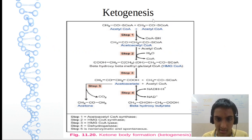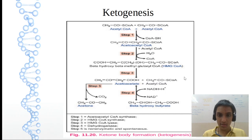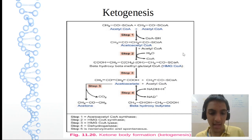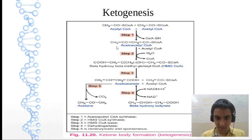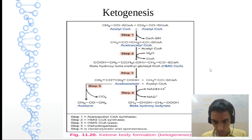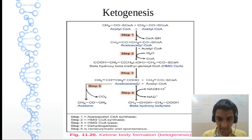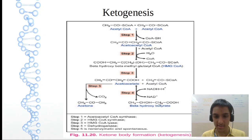Let us see ketogenesis. Two molecules of acetyl-CoA combine together by release of CoASH. The enzyme acetoacetyl-CoA synthase — or thiolase — will yield acetoacetyl-CoA. Then on HMG-CoA synthase, acetoacetyl-CoA plus acetyl-CoA minus CoA-SH will give HMG-CoA — that is beta-hydroxy-beta-methyl-glutaryl-CoA, very important. Then on HMG-CoA lyase we get acetoacetate. Acetoacetate on decarboxylation gives acetone, and on beta-hydroxybutyrate dehydrogenase with NAD+/NADH2 (reversible) gives beta-hydroxybutyrate.